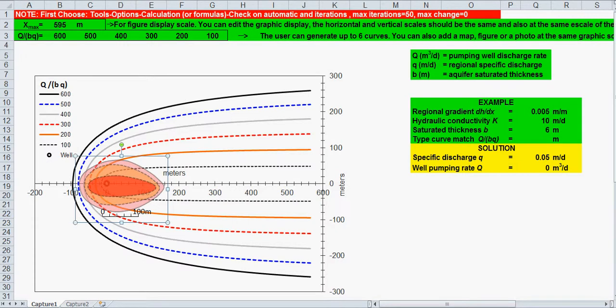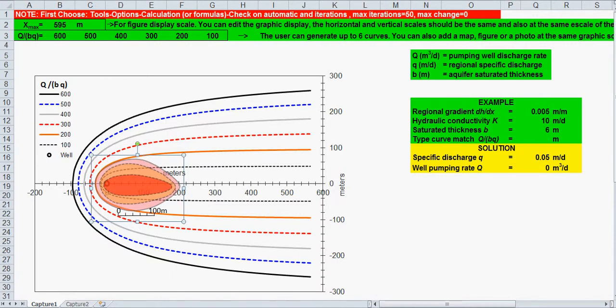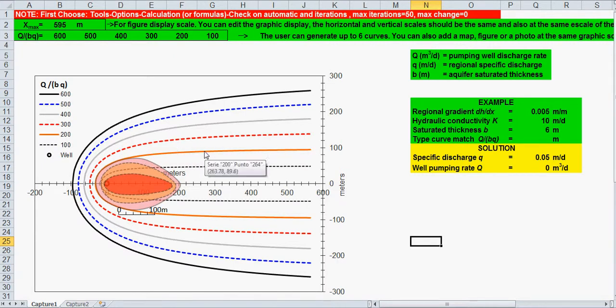So, just with the mouse or just with the cursor you can see which curve fits. If not, you can generate some values but here this curve captures the entire plume and this is the 200 meters type curve. You can see here. Okay. So, just type 200 and you get the result which is the optimum well pumping rate and the optimum location.